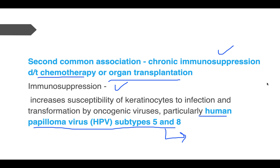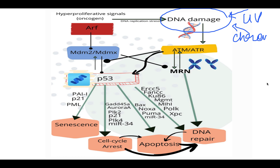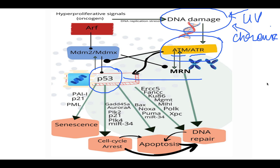Touching briefly on the molecular pathogenesis: normally, if there is any DNA damage — due to UV exposure or chronic irritation — this DNA damage is sensed by checkpoint kinases ATM and ATR. These kinases sense the DNA damage and report it to TP53, which is a tumor suppressor gene. P53 then takes action: it causes cell cycle arrest so that DNA repair can take place.